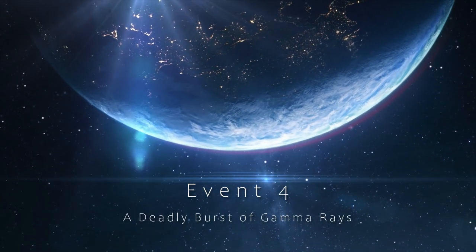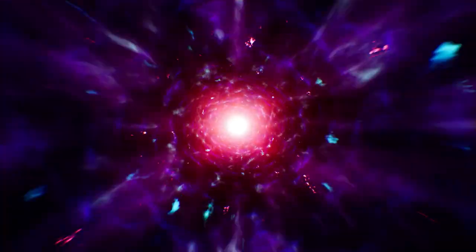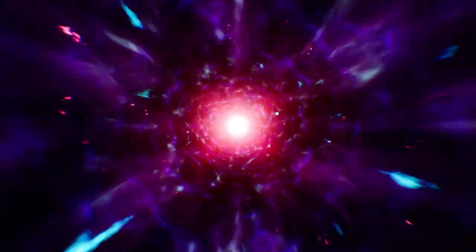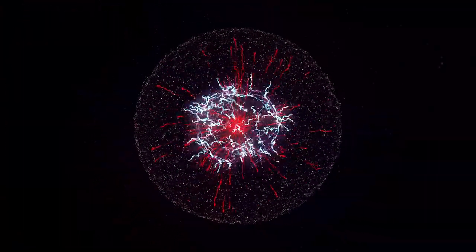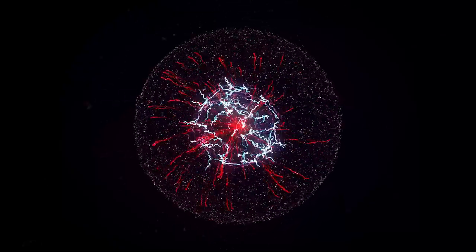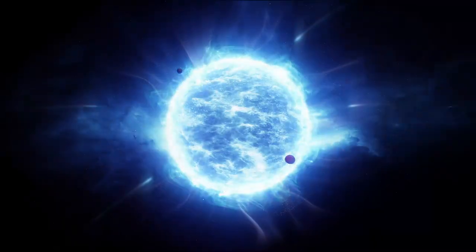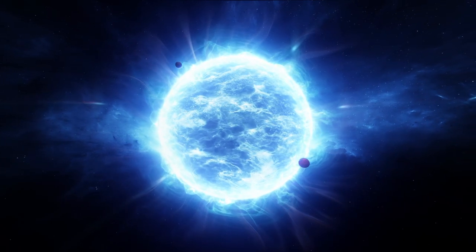Event 4: A Deadly Burst of Gamma Rays. Gamma rays are a powerful but rarely talked about force in the history of radiation. These high-energy releases come from the deepest parts of space and have the power to start disasters. Think of gamma-ray bursts as powerful bursts of energy that are only matched in brightness by the vastness of the universe. The sheer power of these events is so great that for a brief time, they overpower everything else in the universe. Scientists think that these bursts are caused by the collision of dense neutron stars, which are the remains of stars that exploded in big ways.